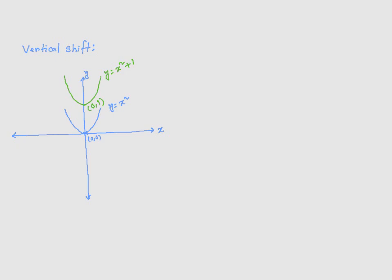I took the function y is equal to x squared and added 1 to it. The effect of this adding 1 is basically taking the original function and moving it up by 1 unit vertically. And that causes this vertex to move to a new point at 0, 1 right here.